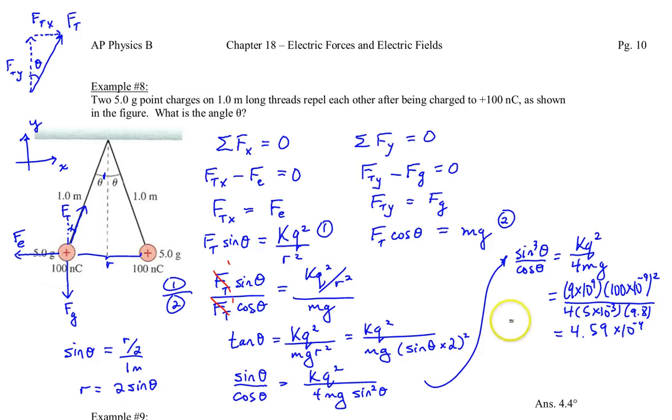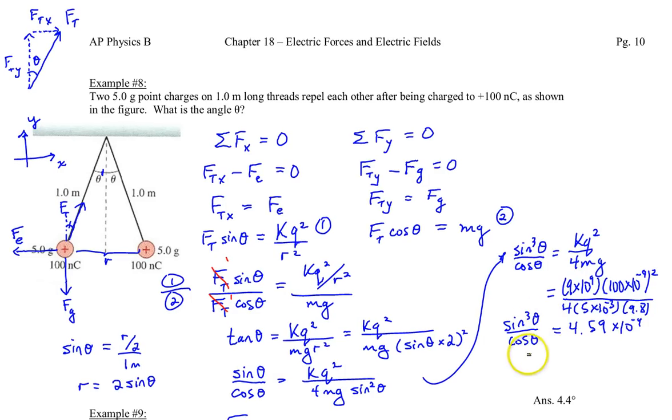And that's equal to sine cubed theta over cosine theta. And I'm thinking, how am I going to solve this? And the only way I can think of it at this point is to basically graph this line, this horizontal line, with this function of sine cubed theta over cosine theta.